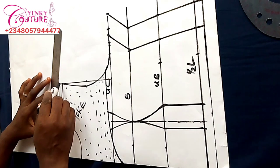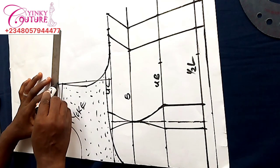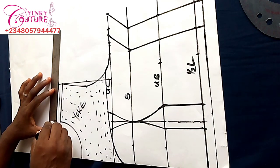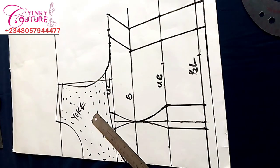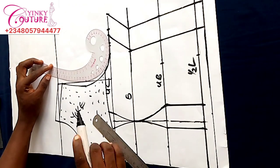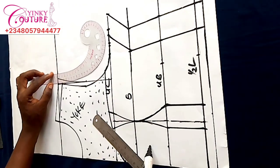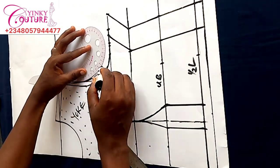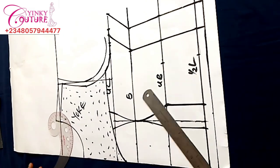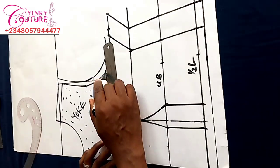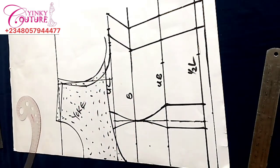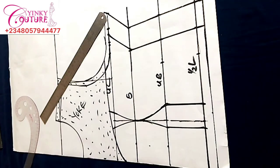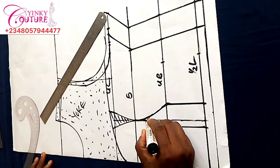I add sewing allowance of half an inch on the half length, half an inch on the shoulder, and half an inch on the armhole as well.